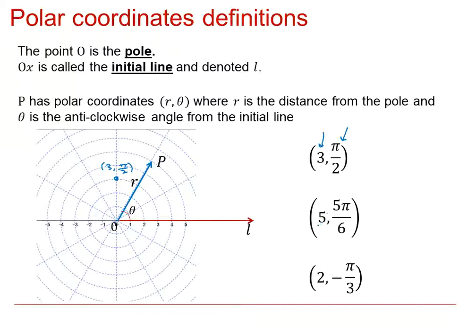This point is 5 units away, and the direction is 5 pi by 6. Pi by 6 would be 30 degrees, so 5 pi by 6 is 150 degrees, which means we're on this dotted line here. And the distance is 5 units from the pole. That point there is the point 5, 5 pi by 6.